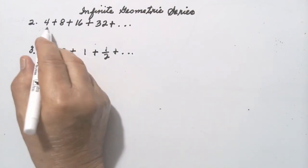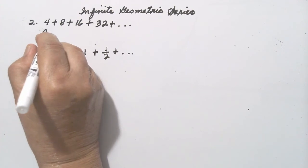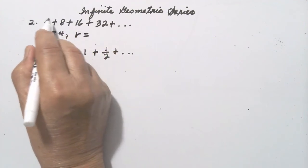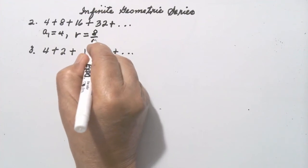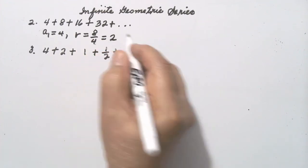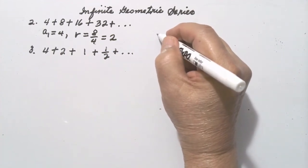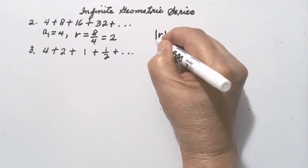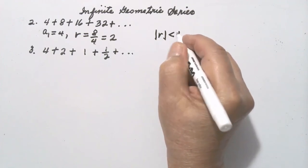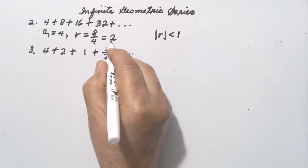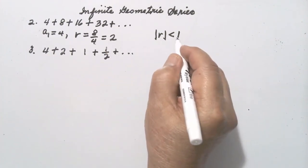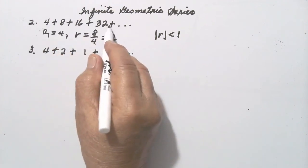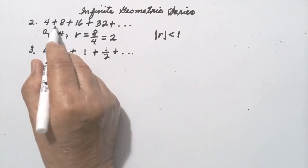Let's do number 2. In this series, the first term is 4. The common ratio is the second term over the first term: 8 over 4 is equal to 2. According to the formula for finding the sum of an infinite geometric series, the absolute value of r should be less than 1. But this is 2, and the absolute value of 2 is 2, which is not less than 1. So we cannot apply the formula — the sum of this series cannot be determined. We can only determine its partial sum.